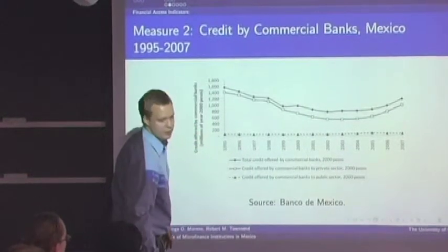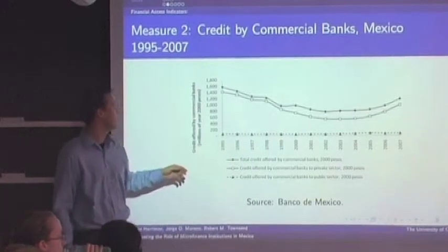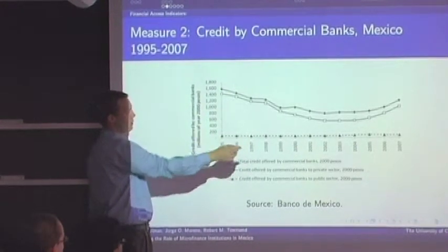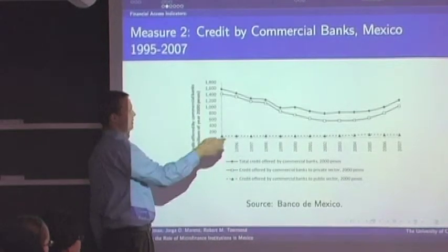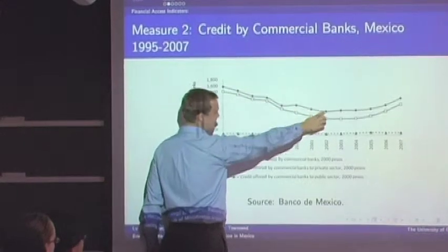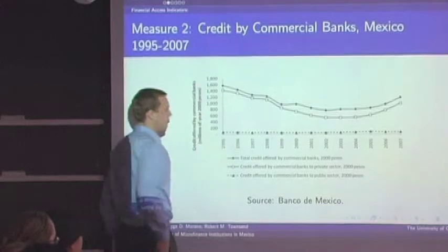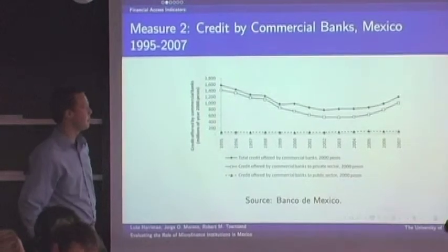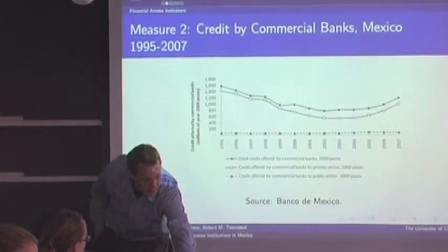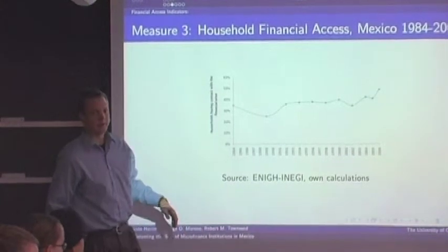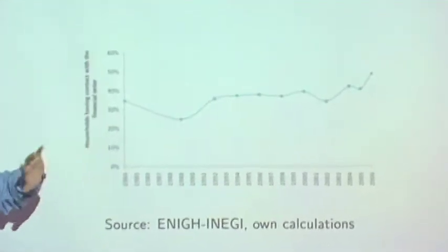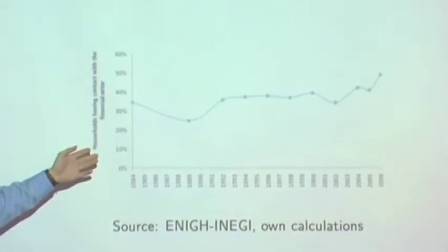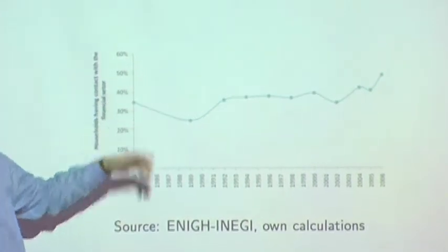The second measure is a little different — more specifically, credit offered by commercial banks. The crisis started to have an effect, but unlike M2 over GDP which rebounds fairly quickly, credit continued to decrease all the way into the 2000s. Lack of willingness by commercial banks to lend, especially to low-income clients, is an issue in Mexico. At the household survey level, household access to the financial sector — broadly defined, including credit unions or informal savings accounts — is moving gradually up but still at relatively low levels around 50%.